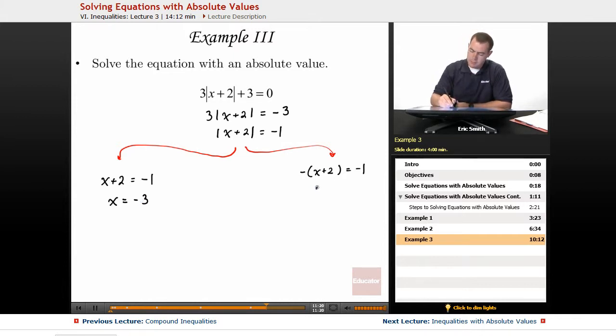On the other side here, I will go ahead and distribute through with my negative sign. Then I will add 2 to both sides. And lastly, let's go ahead and multiply both sides by negative 1.